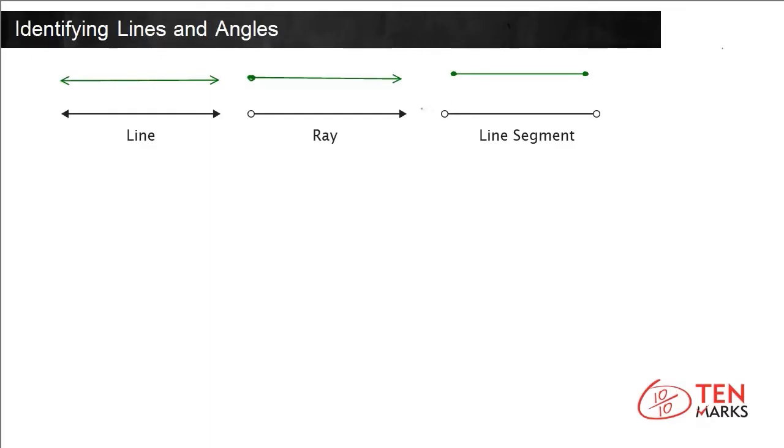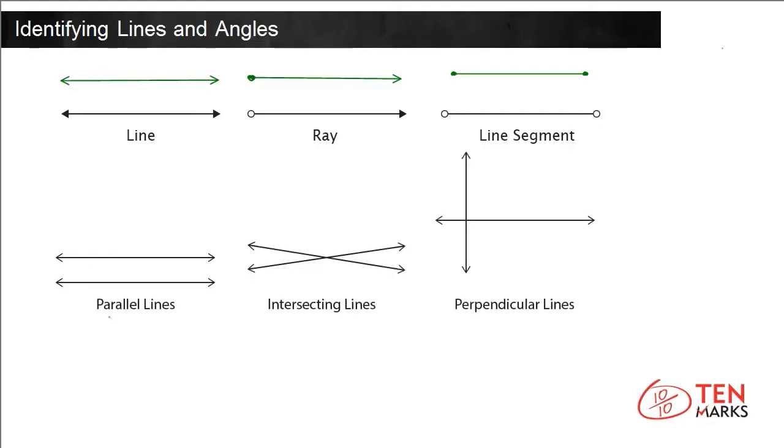Let's take a look at some more lines. Parallel lines are lines that are always the same distance from each other. They never meet or cross. An example of parallel lines is railroad tracks. You can see that these tracks are the same distance apart and will never intersect.